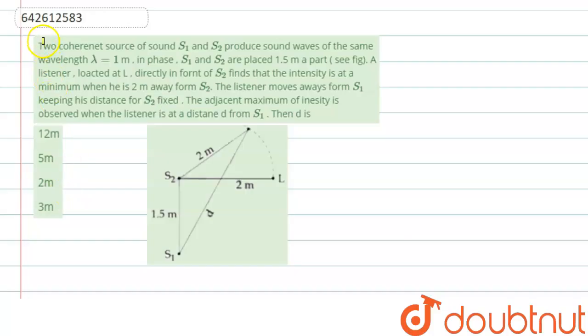Hello everyone, let's start the question. The question says that two coherent sources of sound, S1 and S2, produce sound waves of the same wavelength lambda equal to 1 meter. S1 and S2 are placed 1.5 meters apart. A listener located at L, directly in front of S2, finds that the intensity is at a minimum when he is 2 meters away from S2.